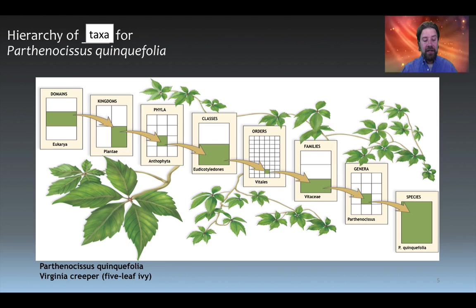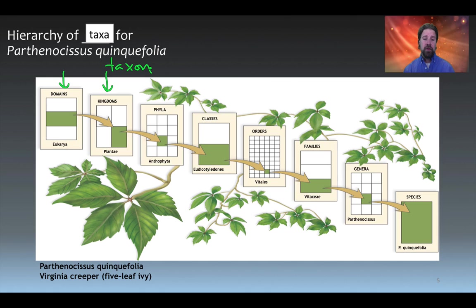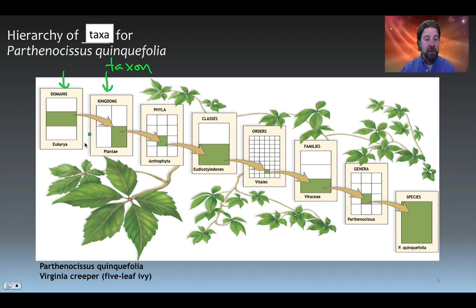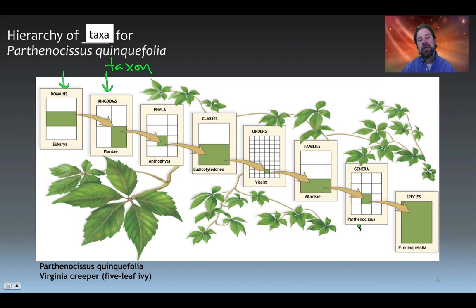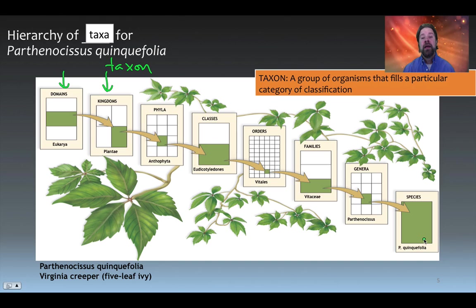Each individual classification unit is not called a 'taxa' but a 'taxon.' Here's an example using Parthenocissus quinquefolia, also known as the Virginia creeper. Going through the levels: Domain Eukarya, Kingdom Plantae, Phylum Anthophyta, Class Eudicotyledon, Order Vitales, Family Vitaceae, Genus Parthenocissus, Species quinquefolia. A taxon is a group of organisms that fills a particular category of classification.